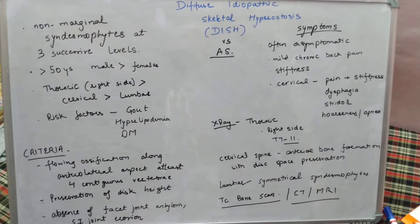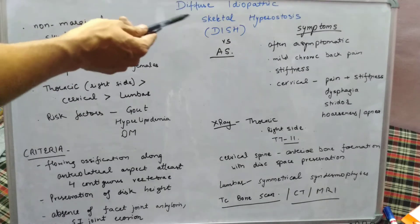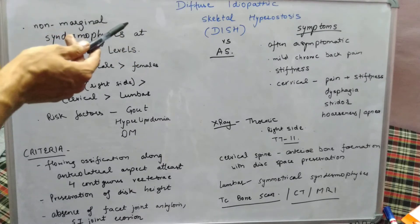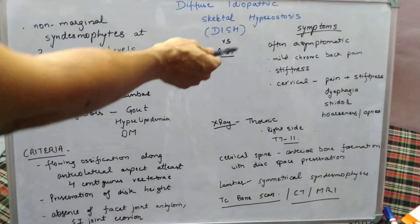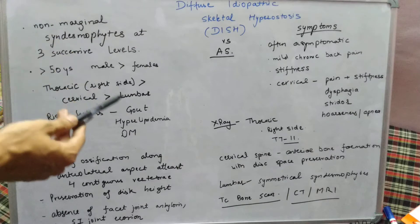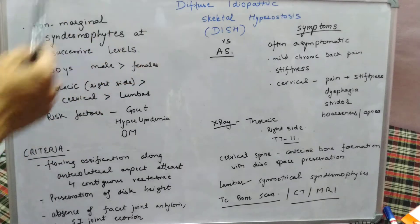Hello, this is the fourth video in the Ankylosing Spondylitis series. In this video we will study about another entity known as Diffuse Idiopathic Skeletal Hyperostosis. DISH is a commonly used term alongside Ankylosing Spondylitis, and wherever Ankylosing Spondylitis is discussed, we should know the differentiating features between DISH and Ankylosing Spondylitis.